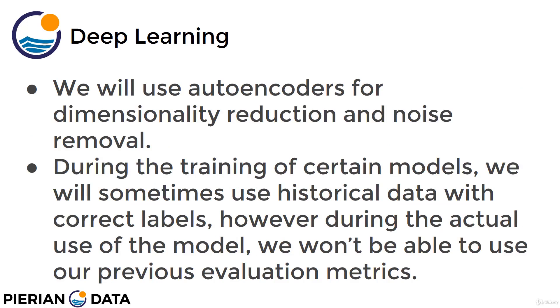We're going to be using autoencoders for really two main things. One is dimensionality reduction, which is pretty much what all autoencoders do to some degree. And then we'll see how we can use this dimensionality reduction to actually remove noise from images.